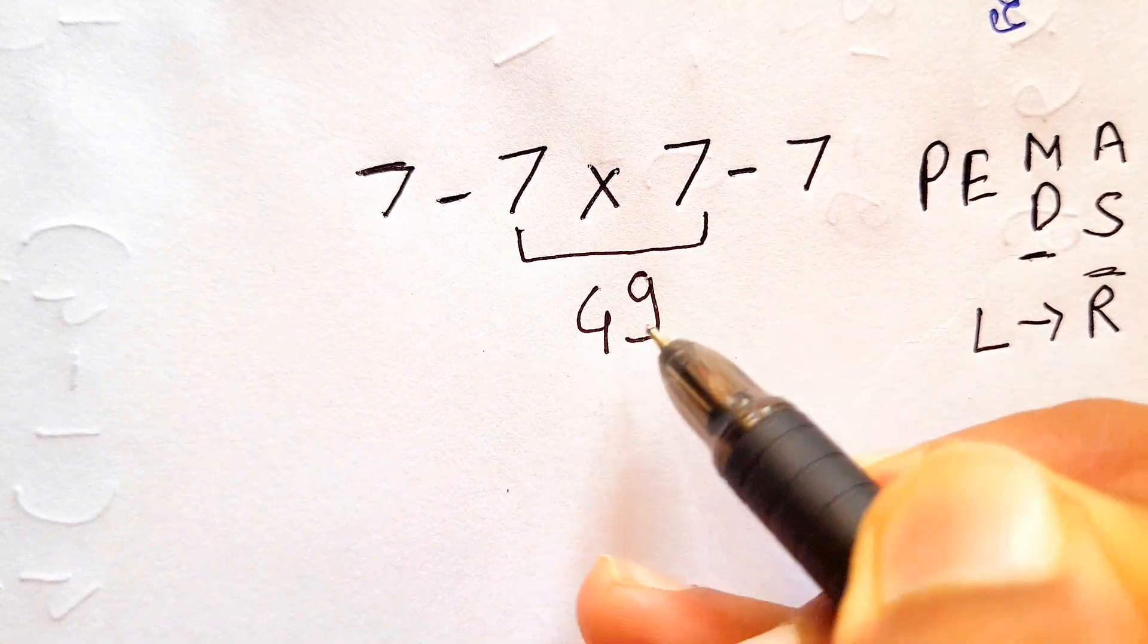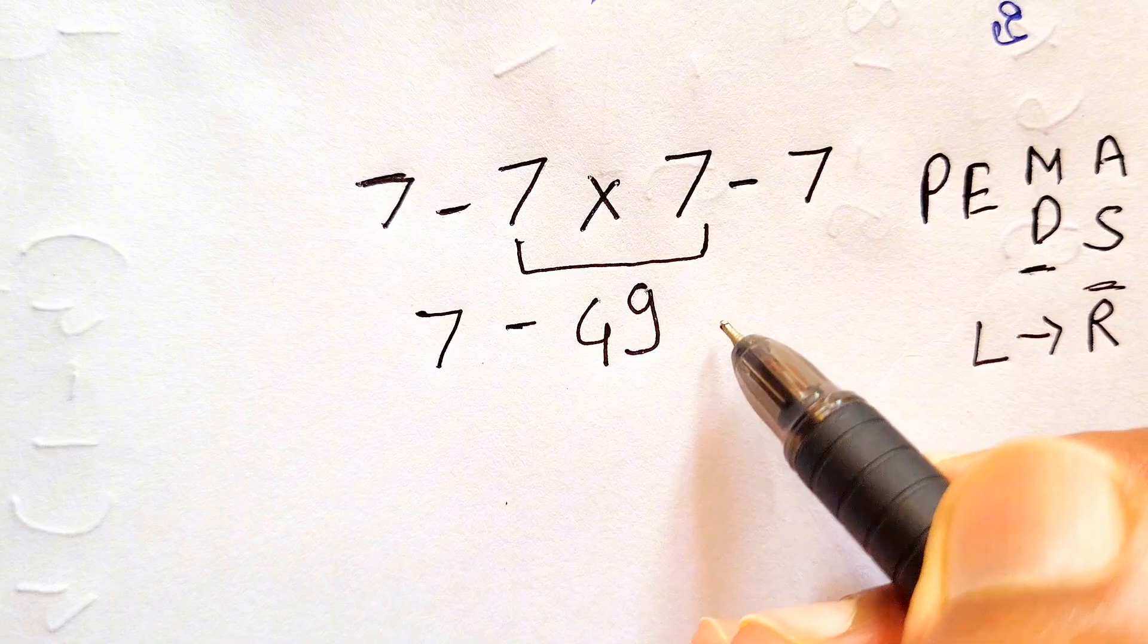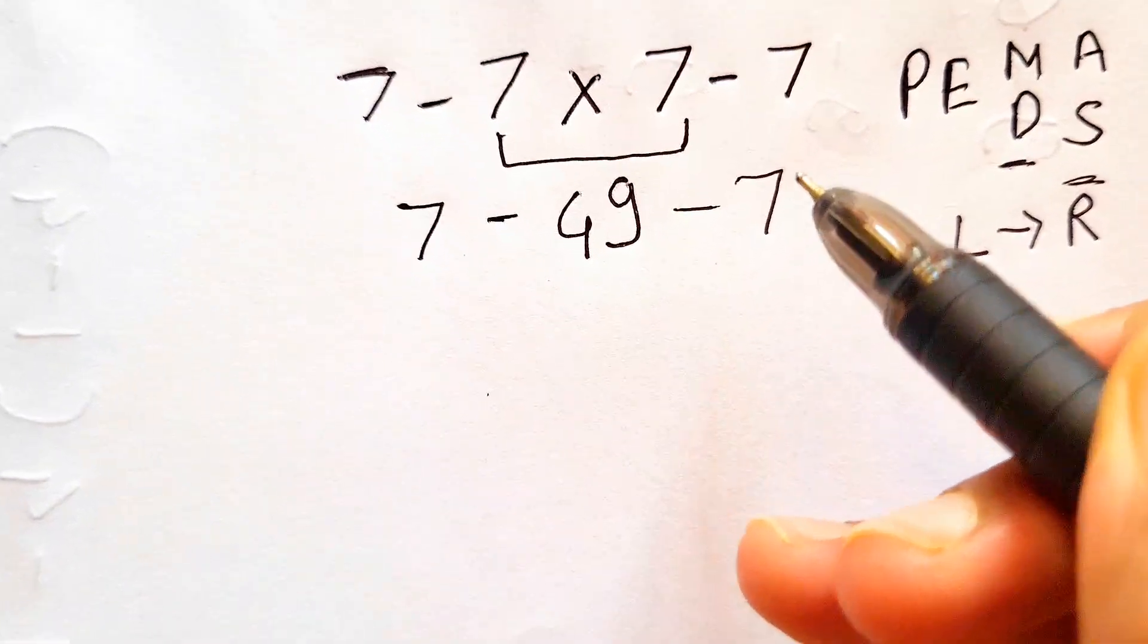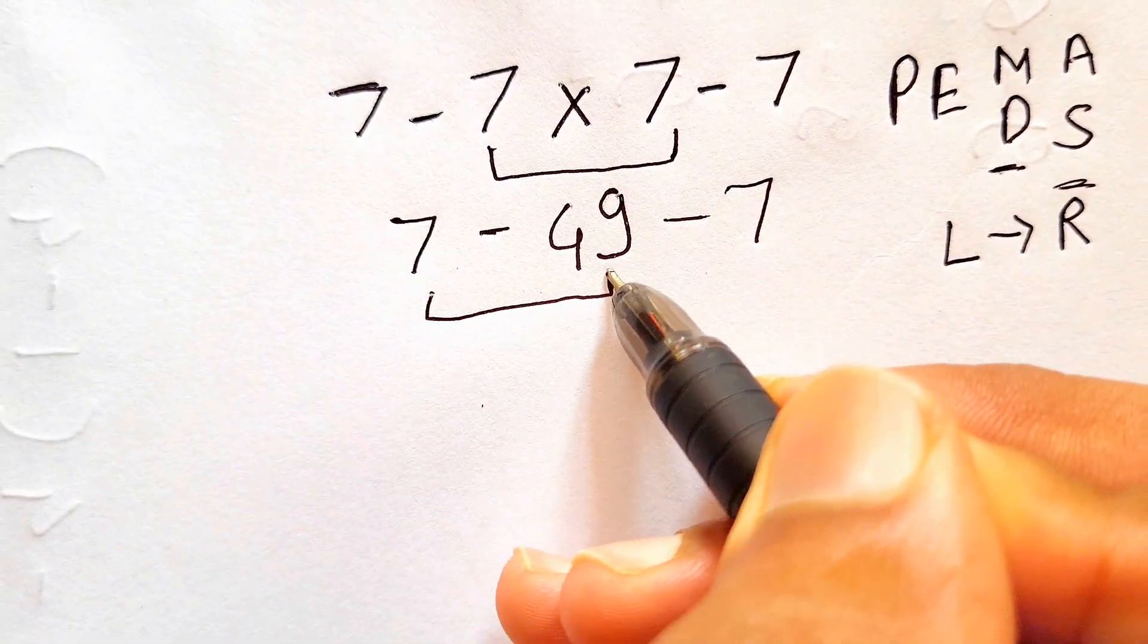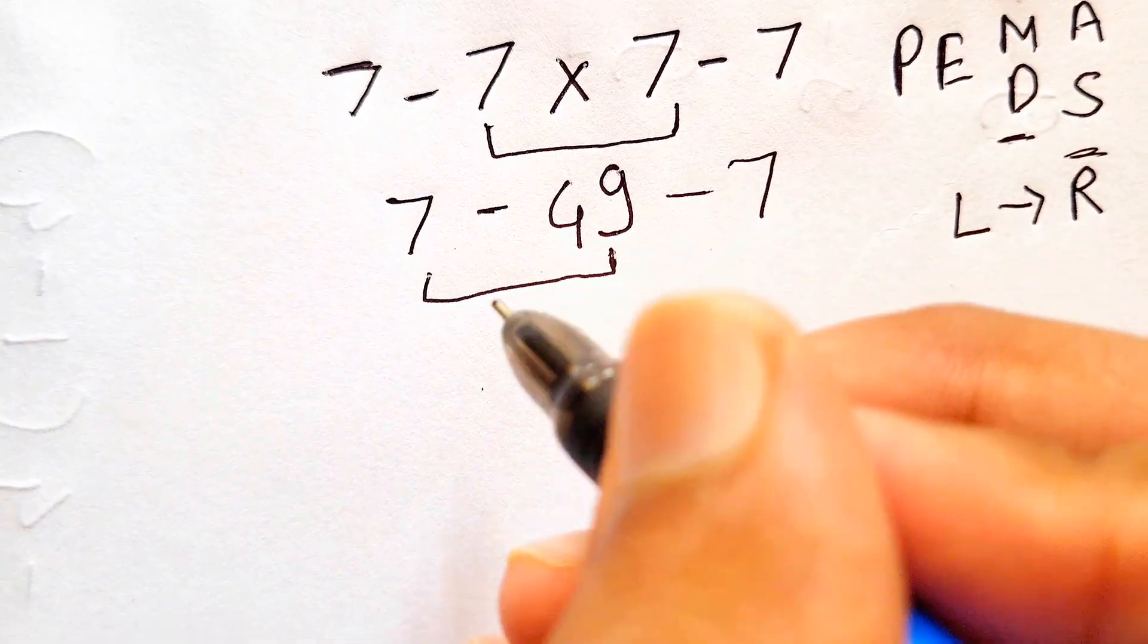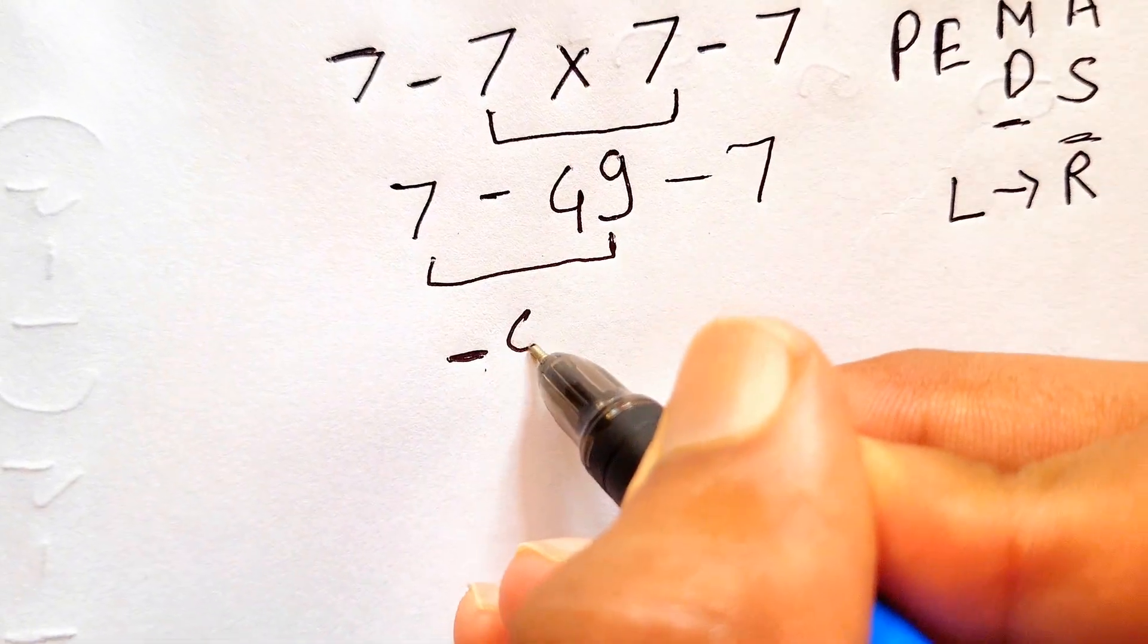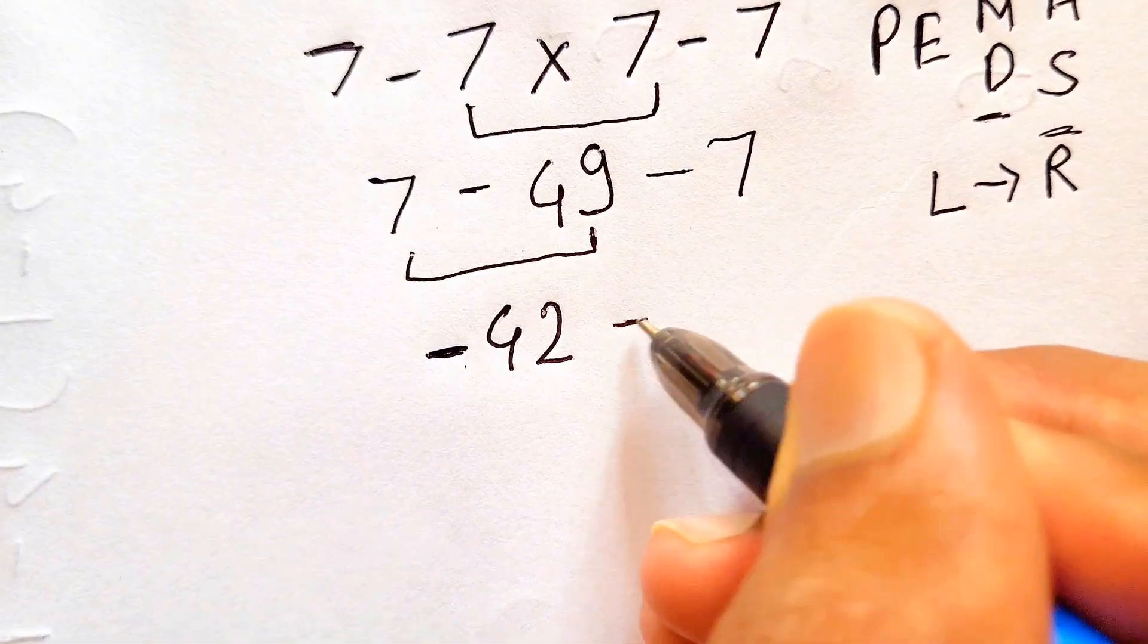And we'll rewrite the expression: 7 minus 49 minus 7. So this is the expression. Now both the signs are of subtraction, so we need to go from left to right. So first we'll solve the 7 minus 49, that simply gives us negative 42. So we'll write negative 42 and then this minus 7 as it is.